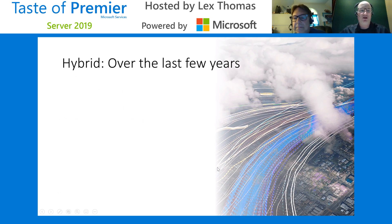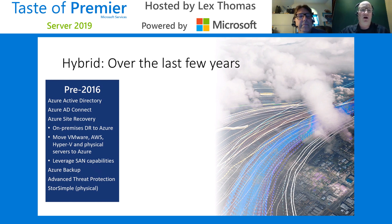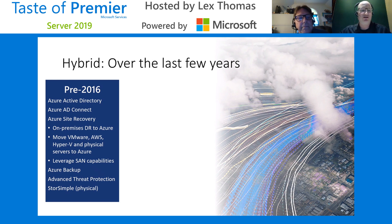When talking about those four pillars, the first one was hybrid. Over the last few years you can see we've made a lot of improvements. We started back before 2016 with Azure Active Directory and AD Connect — it used to be called a bunch of different things but we've settled on Azure AD Connect. We had Azure Site Recovery as well, on-premise DR to Azure. If you think about the old ways of doing disaster recovery, this is a great advancement, and this all started in pre-2016.